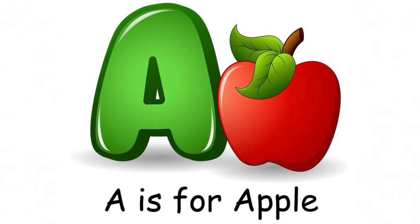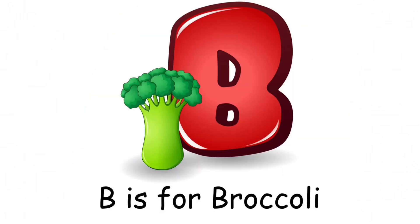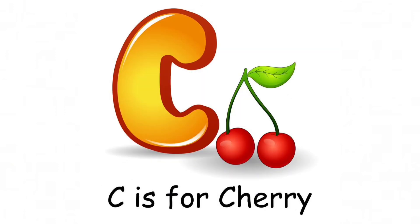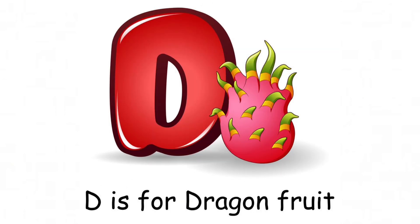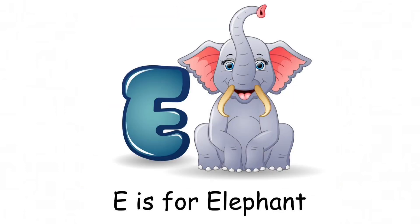A is for apple, B is for broccoli, C is for cherry, D is for dragon fruit, E is for elephant.